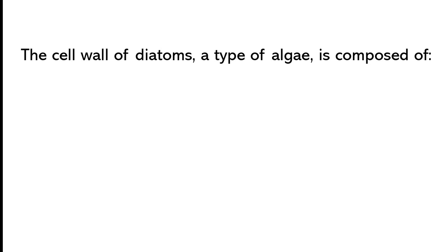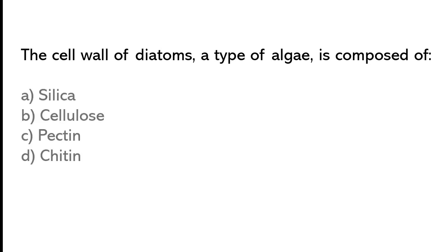The seal wall of dye atoms, a type of algae, is composed of: silica, cellulose, fectin, or chitin. The correct answer is option A: Silica.